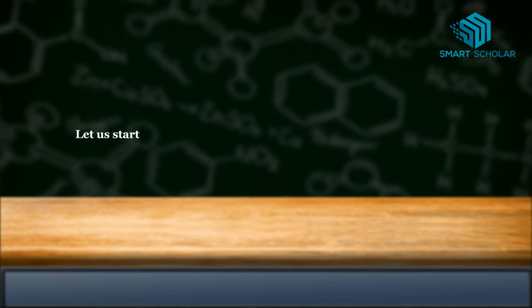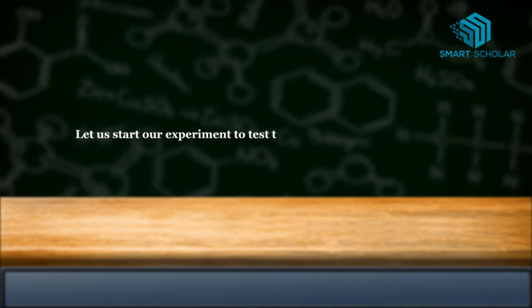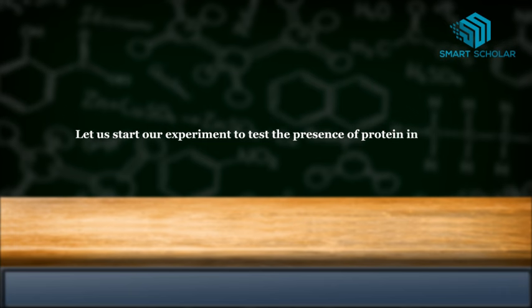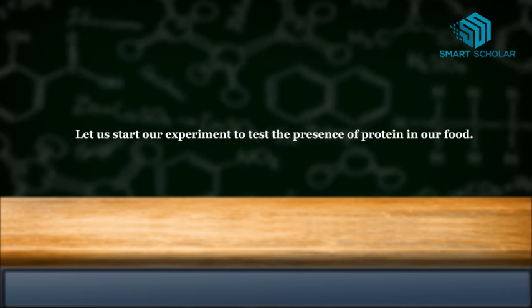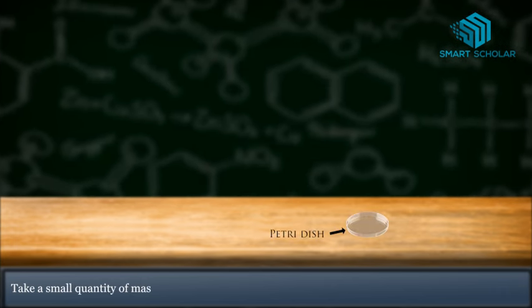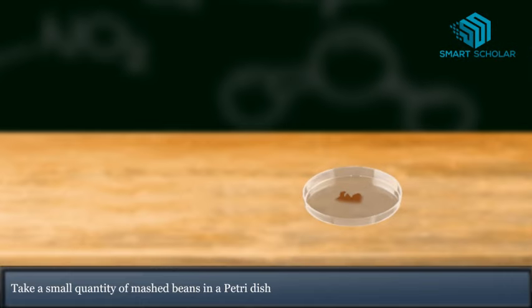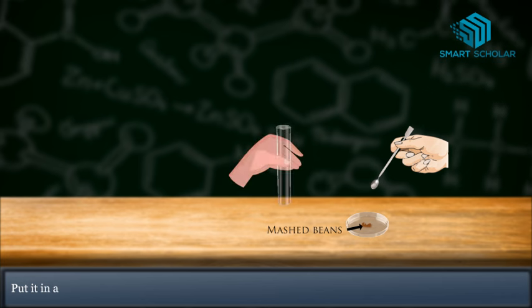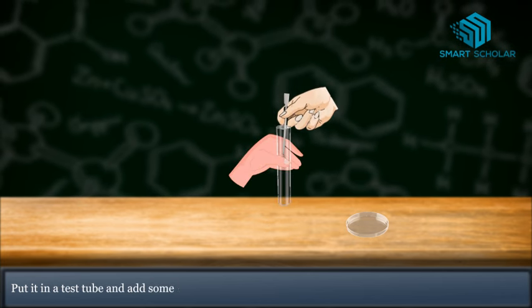Let us start our experiment to test the presence of protein in our food. Take a small quantity of mashed beans in a petri dish. Put it in a test tube and add some water.